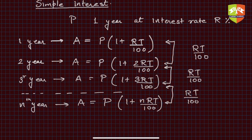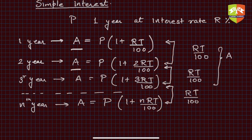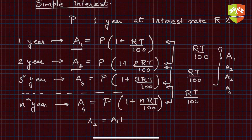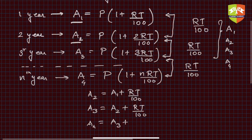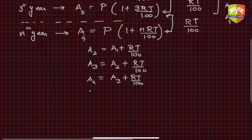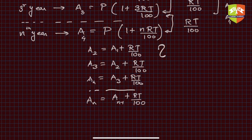You can clearly see that between any two consecutive years the amount of interest stays the same. This is how simple interest links to sequence and series. If we call these amounts a1, a2, a3, a4, then a2 = a1 + RT/100, a3 = a2 + RT/100, a4 = a3 + RT/100, and the nth year amount is a_n = a_(n-1) + RT/100. This is a typical behavior of something called Arithmetic Progression.